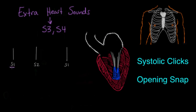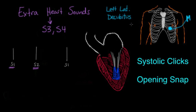S3 and S4 are not murmurs — they're sounds almost like another S1 or S2, just in a different location. They're heard best in the mitral or apex position, specifically with the patient lying in the left lateral decubitus position. This means the patient rolls over to their left side and the clinician listens with the stethoscope in the mitral position. Rolling over shifts the heart closer to the ribcage and therefore closer to the stethoscope.